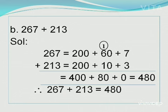In the working column, you will be adding 400 plus 80 plus 0. Then you will get the answer 480. So therefore we can write it as 267 plus 213 becomes 480.